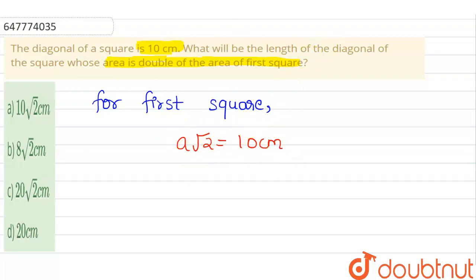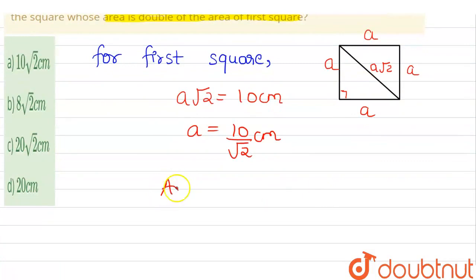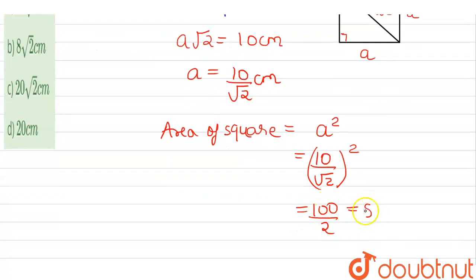The diagonal is a√2. I have to draw a square. After drawing a square, I have to put the diagonal. The side will be a, and the diagonal is a√2. If I want to write, a = 10/√2. What will be the area of the square? The side squared: (10/√2)². How much? 100/2.